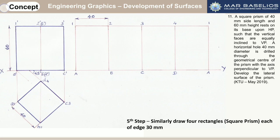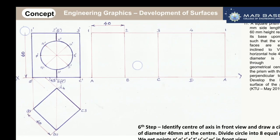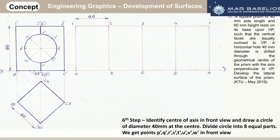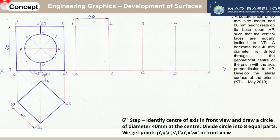In the question, you are asked to drill a horizontal circular hole of 40 mm diameter. First find the center of the square prism, and with this point as center and a radius of 20 mm, draw a circle. You can name the generators as P', Q', R', S', etc. We have drawn the circle exactly at the center of the front view and then we name the generators.